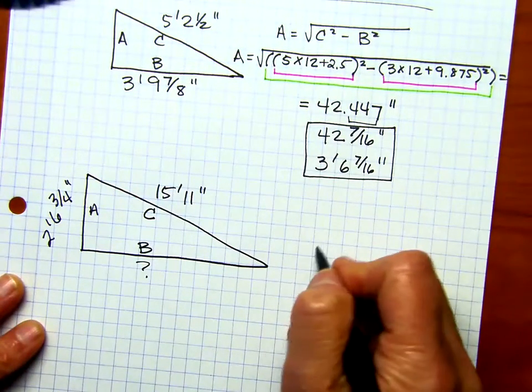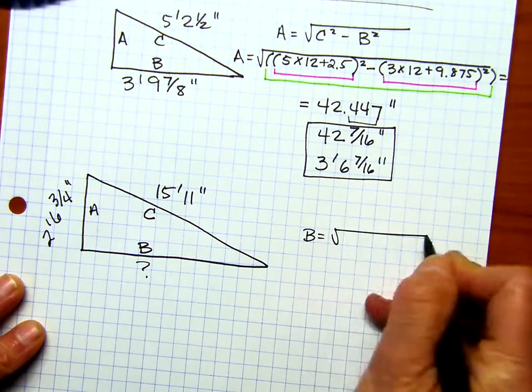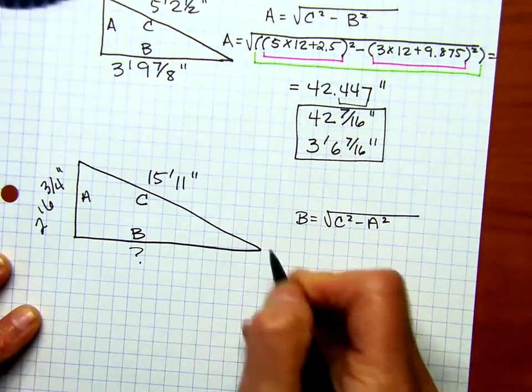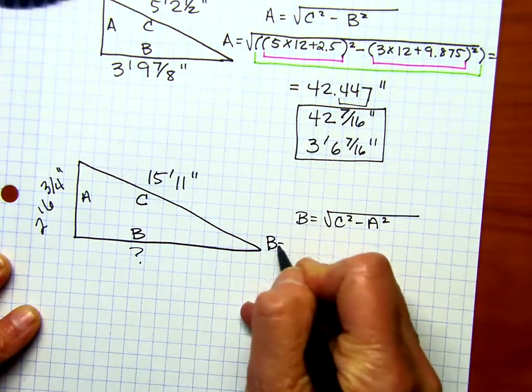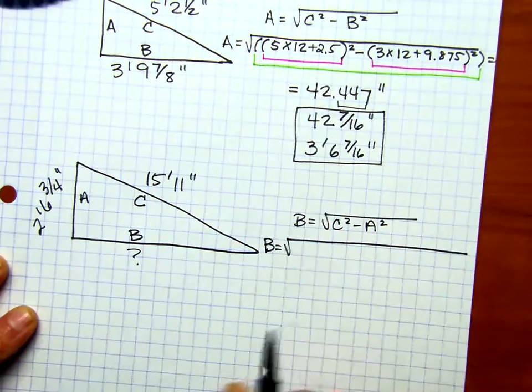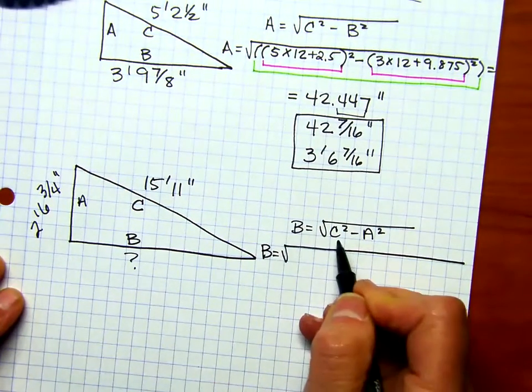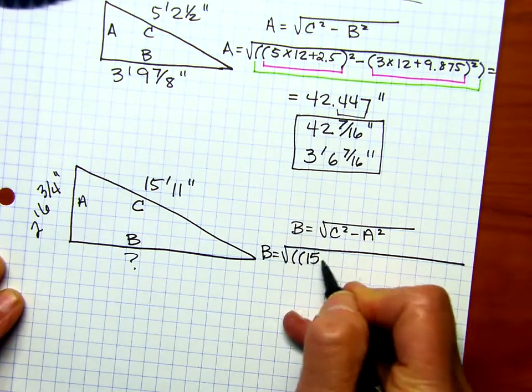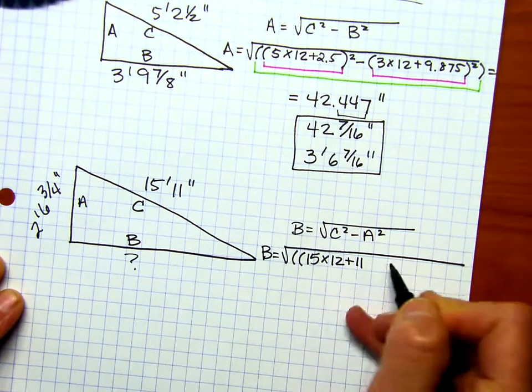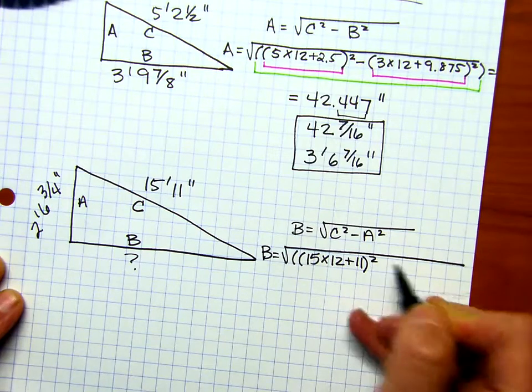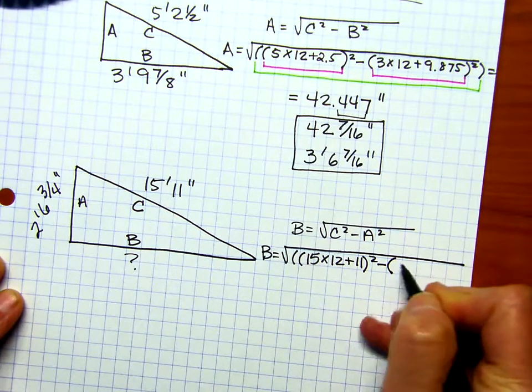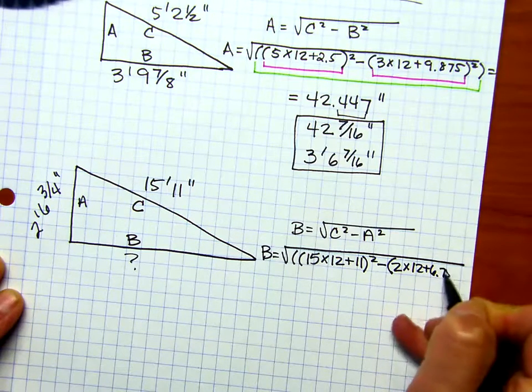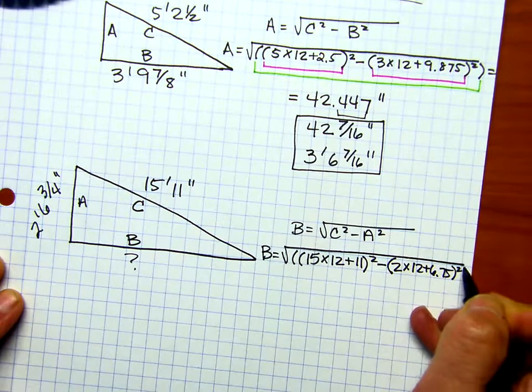So, I want to write B equals the square root of C squared minus A squared. And then I want to write out the really long square root sign, because we're going to do the same thing. We're going to start with C, which is the 1511. So, write that out. 15 times 12 plus 11 close X2 minus, open, 2 times 12 plus 6.75 close X2 close equals.